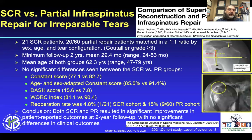SCR versus partial infraspinatus repair: a recent paper compared 21 SCR patients versus a partial repair group, matching for sex, age, tear configuration, and Goutallier grades with a minimum 2-year follow-up. Mean age of both groups was about 62. Looking at constant scores, DASH scores, work scores, and re-operation rates, they found 4.8% re-operation in the SCR group versus about 15% in the partial repair group. Both SCR and partial repair resulted in significant improvements in patient-reported outcomes at two years with no significant differences between the two — so if you can fix anything, it's probably just as good as trying to do a more complex procedure.